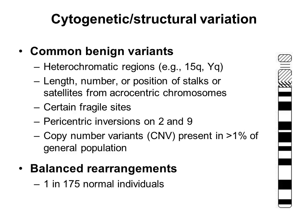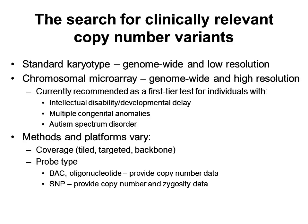Other structural variants, such as balanced rearrangements like translocations and inversions, are individually rare, but as a whole are not infrequently found. These do not often result in abnormal development, but can result in adverse reproductive outcomes. Historically, for individuals with developmental disabilities or congenital abnormalities, chromosome analysis is typically interested in detecting unbalanced structural rearrangements, such as large deletions or duplications of chromosomal material that are clinically relevant.